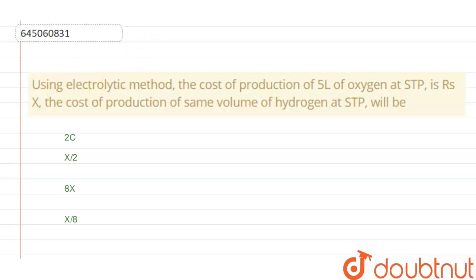Hello students, the question is: Using electrolytic method, the cost of production of 5 liters of oxygen at STP is rupees X. The cost of production of same volume of hydrogen at STP will be, and the options are A is 2C, B is X by 2, C is 8X and D is X by 8.